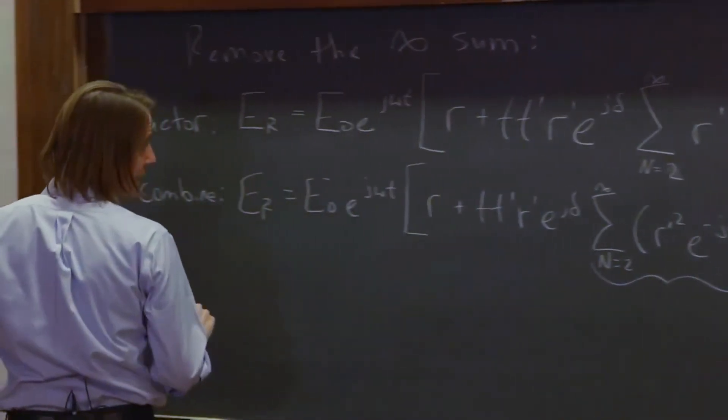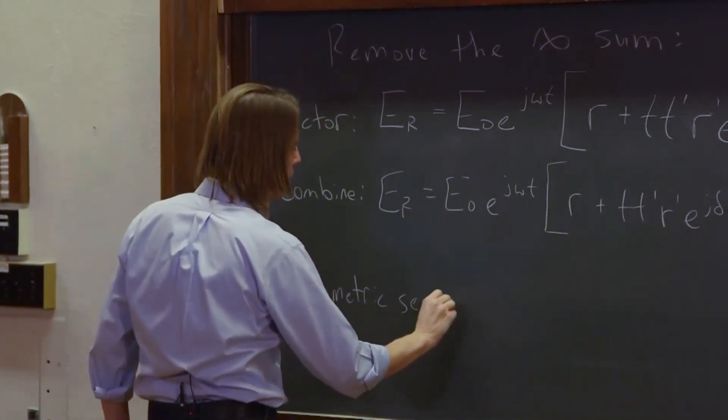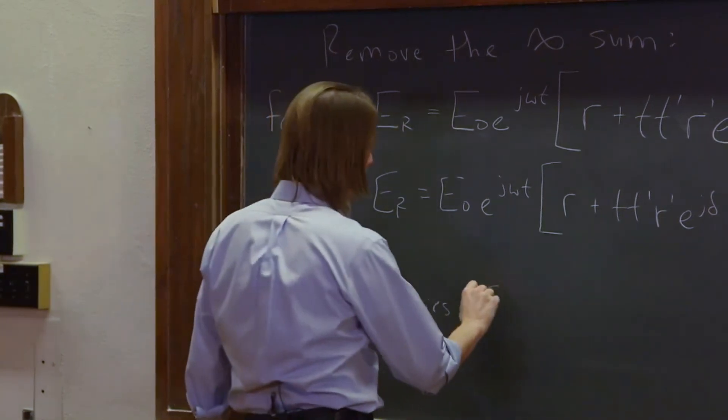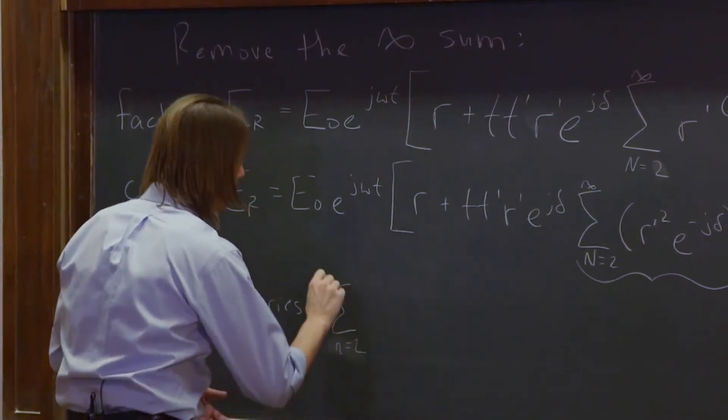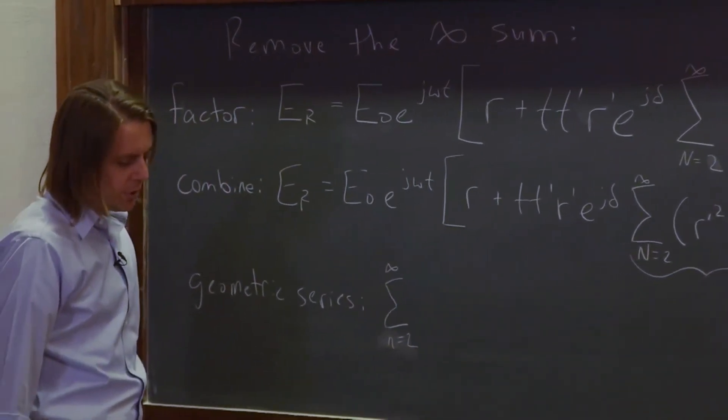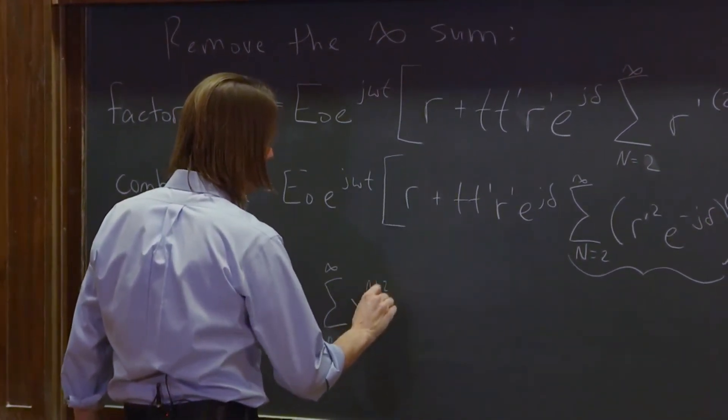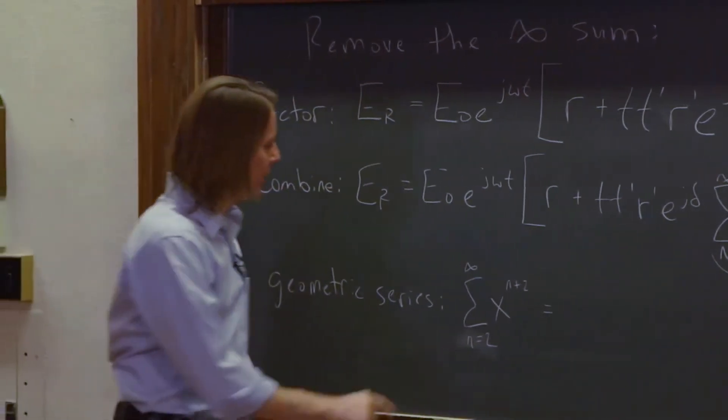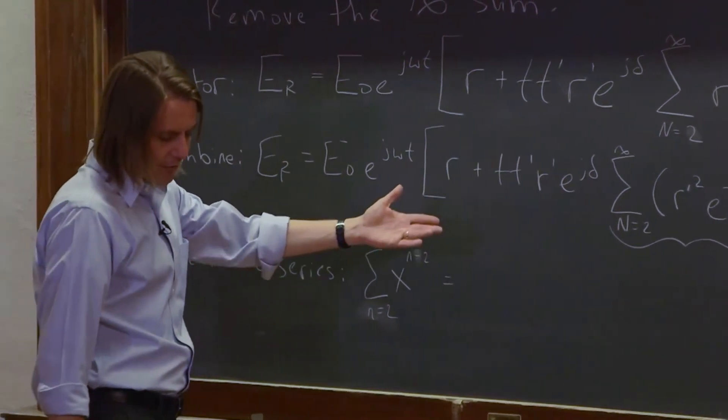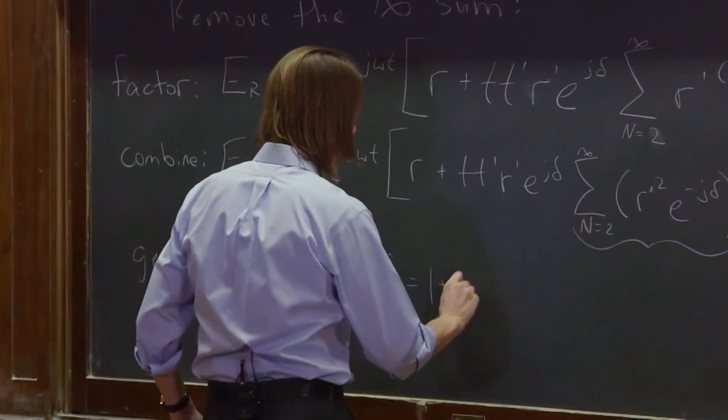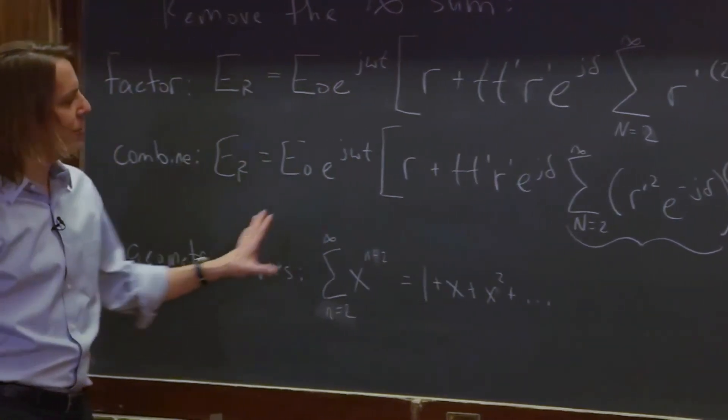And then we're going to recognize that we have created something here. This is a geometric series. So if you have the sum of N equals, here I'll just say little N. This is not the same problem. N equals 2 to infinity of X to the N minus 2 looks just like what we have there. That's equal to 1 plus X squared plus dot, dot, dot. This is not the most general geometric series.